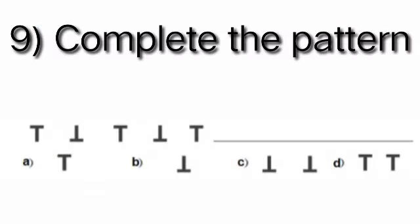Question number 9: Complete the pattern. In this pattern, you can see the positions of T. First of all, T's position is upward, then downward, upward, then downward, upward. Then, dear student, what comes after upward? Yes, the T position is downward.